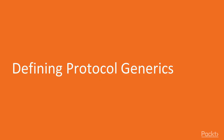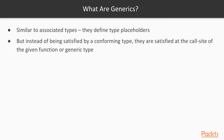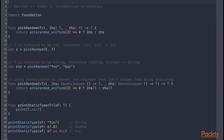In this first video we'll be introducing you to generics, showing how to define generic functions and generic types. Generics are somewhat similar to associated types in that they allow you to define placeholders which are then later satisfied. The difference is that while associated types are satisfied by a particular conforming type, generic placeholders are satisfied at the call site of the given function or generic type.